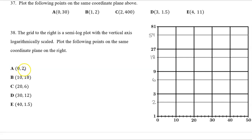So point A (0, 2) is right here. Then point B (10, 18), so here's 10, and here is 18. And then point C is (20, 6). So here's 20, and here is 6.